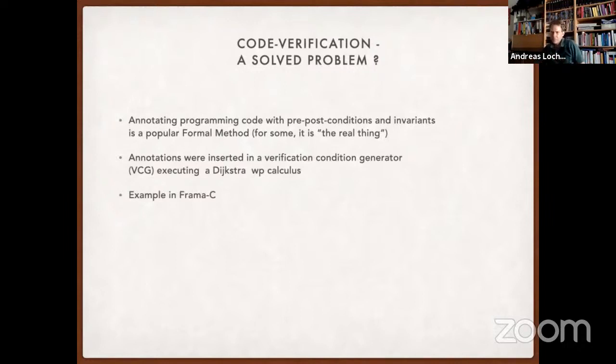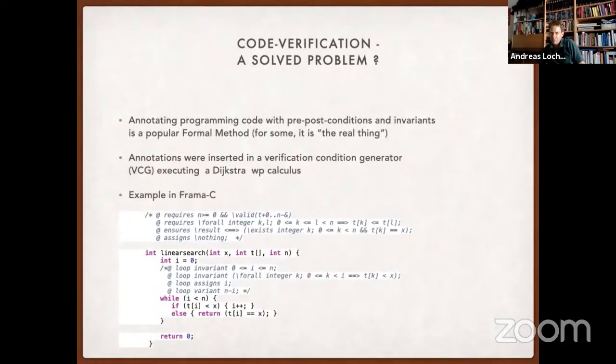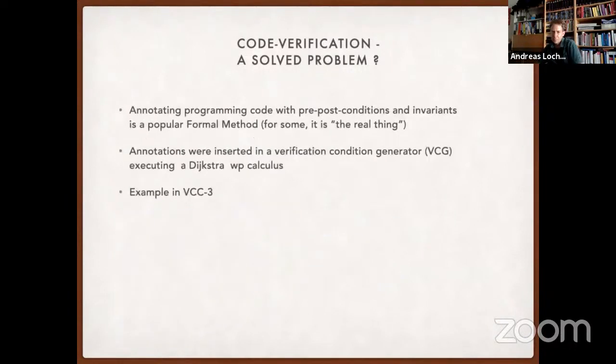A typical example is Frama-C, which has code like this. In the core you have a linear search procedure with the contracts elements before, and you have the invariants and the variants at the place where you need specific semantic information about the loop. If you look more closely, this specification code has constructs to talk about memory, about framing conditions, particular logic, and the underlying methods - whether you're talking about partial correctness or total correctness.